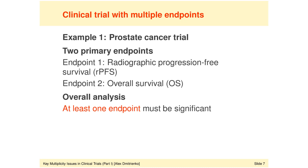This is how we define the win criteria in this example. It will be ideal for the sponsor to show that the experimental treatment decreases the risk of radiographic progression and at the same time the risk of death, but formally the two endpoints are independent of each other. In the original paper summarizing the results of this clinical trial, the two endpoints were labeled as co-primary, and I find this language to be somewhat confusing. I would recommend referring to those endpoints as simply two primary endpoints in the context of this particular clinical trial example.